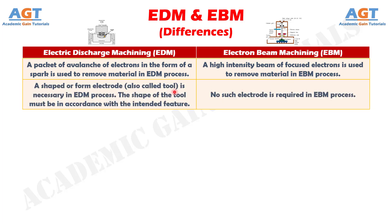Number 2: A shaped or form electrode, also called a tool, is necessary in the Electric Discharge Machining process. The shape of the tool must be in accordance with the intended feature, whereas no such electrode is required in the Electron Beam Machining process.